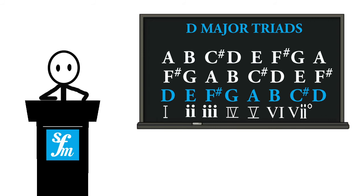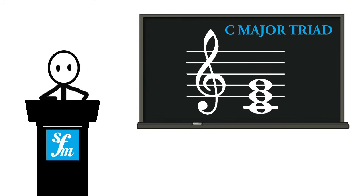In the major key the chords will always appear like this — chord one will always be major, chord two will always be minor, and so on. So what's the difference between major, minor, and diminished? A major chord sounds like this. A minor chord sounds like this. And a diminished chord sounds like this.